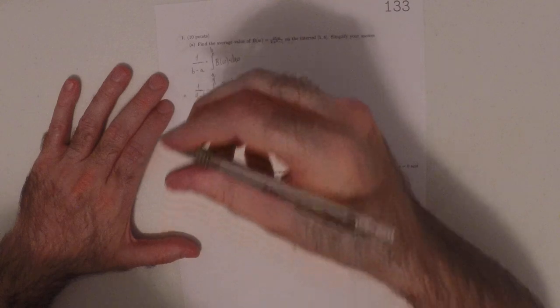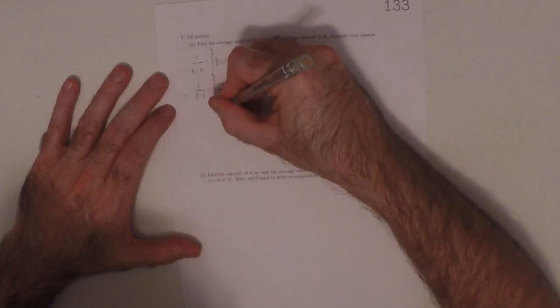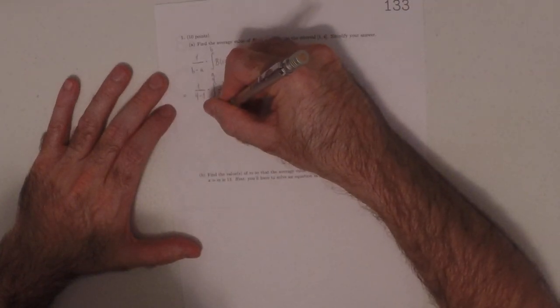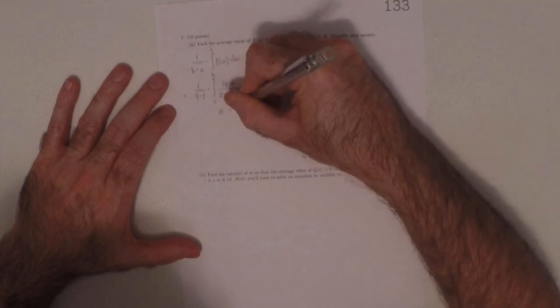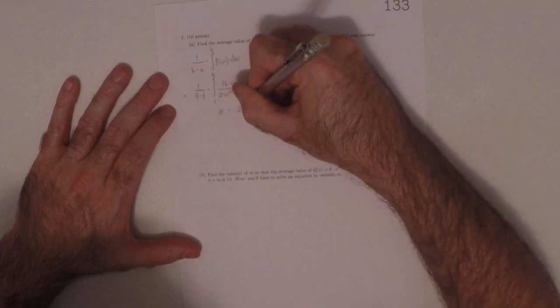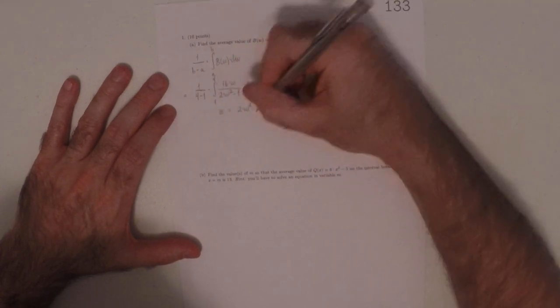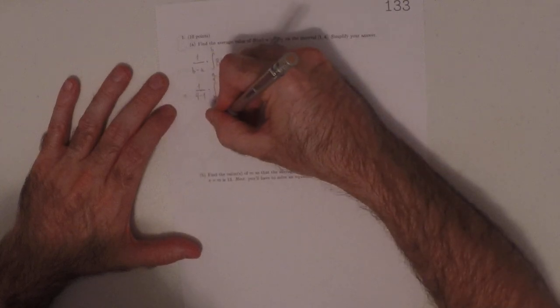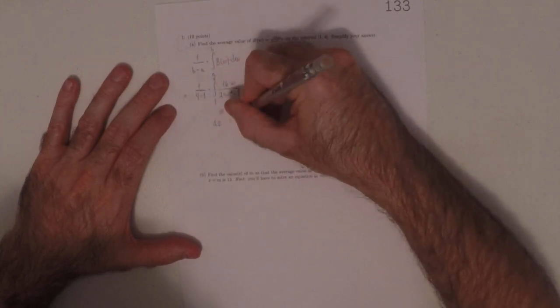We'll do a substitution. How about z is 2w squared minus 1. So dz is 4w dw.